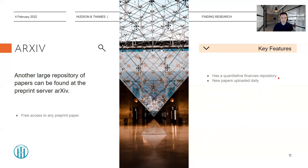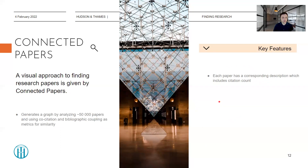arXiv has a quantitative finance repository, and all repositories on arXiv get updated every day with new papers. Finally, I would like to mention a very interesting tool called Connected Papers. This is a visual approach to finding research papers — if you search for a paper in their search bar, it will generate a graph consisting of papers that are similar to it. It analyzes about 50,000 papers and uses co-citation and bibliographic coupling as metrics to determine similarity. You can click on a node in the graph to see a description of the paper along with interesting information such as the citation count.